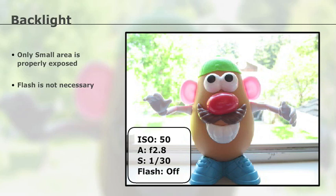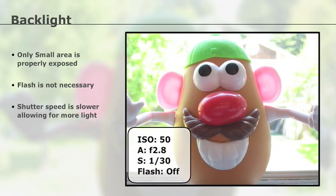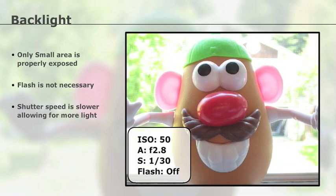Whether that's a good or bad thing is up to you to decide. You'll notice the shutter speed is much slower to add more light and brighten the subject. If the subject was any darker, I would have had to use a tripod because the shutter speed would have been too slow to handhold the camera. Don't be afraid to fill the frame with your subject — if I crop this image a bit, the background will be much less distracting.